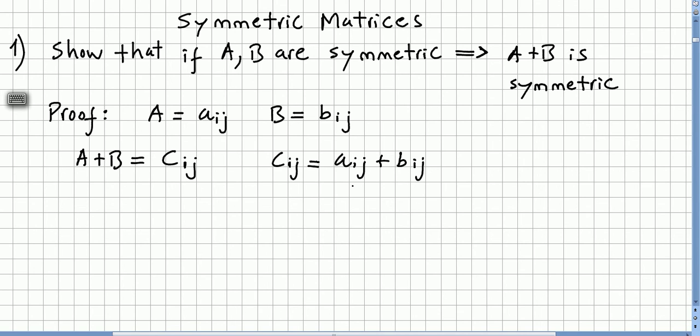But a_ij plus b_ij, since A is symmetric, A will be equal to a_ji plus, and B is also symmetric, so B will be equal to b_ji.